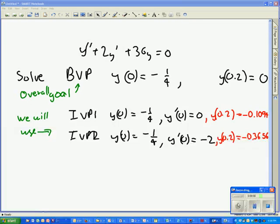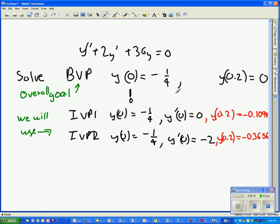Hi, this is a quick little video to explain the shooting method. What we have here at the top is a differential equation that we want to solve for a certain boundary value problem. We want to know what the function is at a boundary at 0 and at 0.2, so two different boundaries.